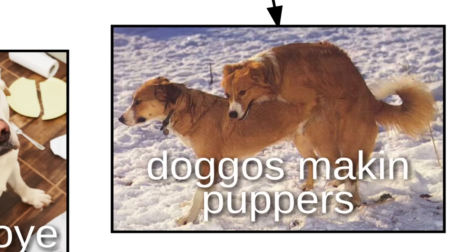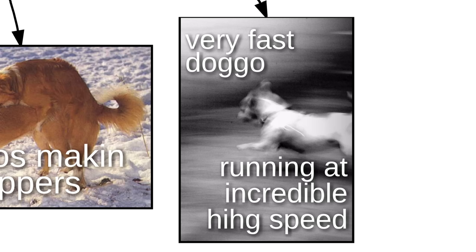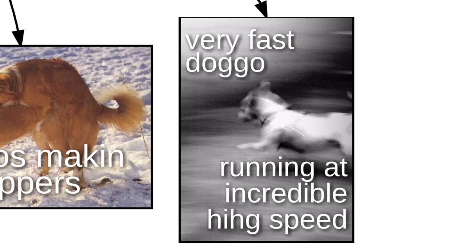Sometimes they're doing me a frighten. This is Trashboy. This is doggos making puppers. This is a very fast doggo running at incredible high speed.